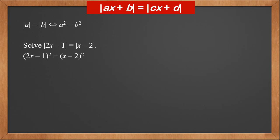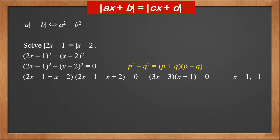We can open both brackets, move terms around, and collect like terms. However, it's easier to rewrite it as two x minus one squared minus x minus two squared equals zero, and use the identity p squared minus q squared equals p plus q times p minus q. So it factorizes into two x minus one plus x minus two, times two x minus one minus x plus two.